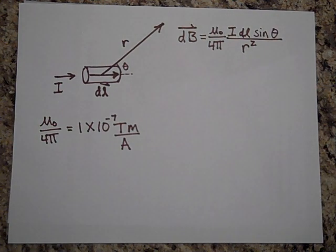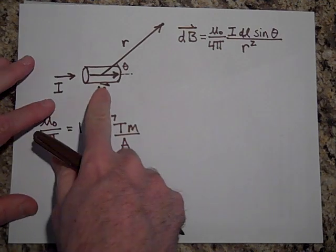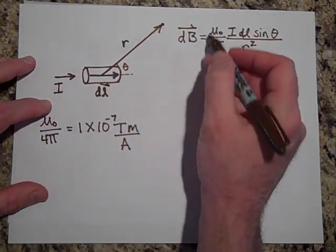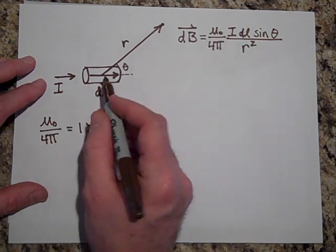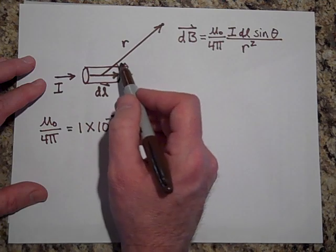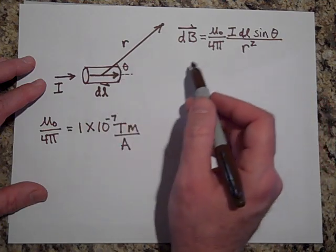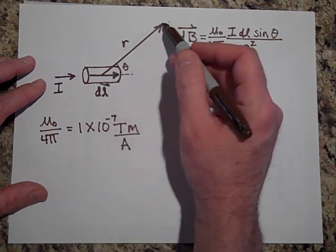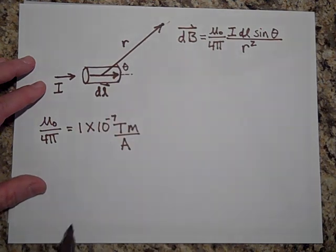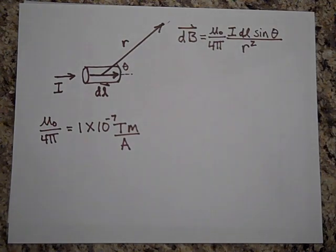Okay, well in any case, the magnetic field due to this current element is going to be just a constant times how big the current is times DL times the sine of theta, the angle that it makes, all over R squared, R being the distance from the center of the DL to where you want to find the field.